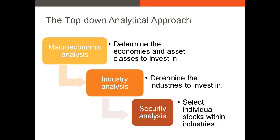The process we're going to use when analyzing securities is called the top-down approach to investing. It has three stages: macroeconomic analysis, industry analysis, and security analysis. We start with macroeconomic analysis, where you analyze macroeconomic conditions to determine the outlook for investors in various asset classes and various markets. The goal is to get a sense of what economies and asset classes are most likely to be worthwhile from an investment standpoint.